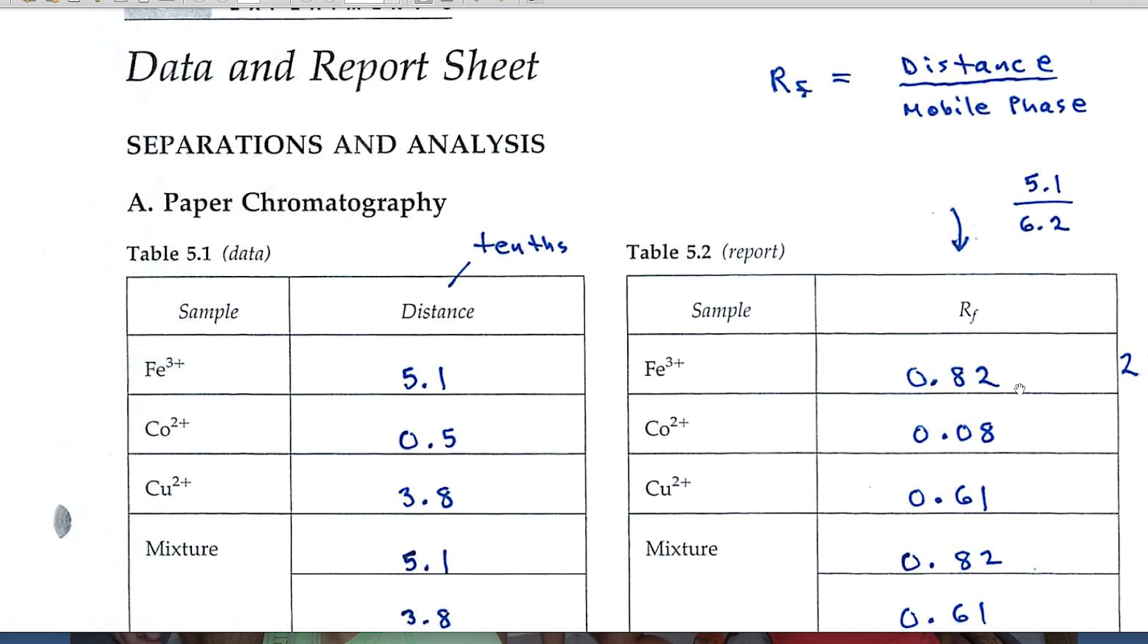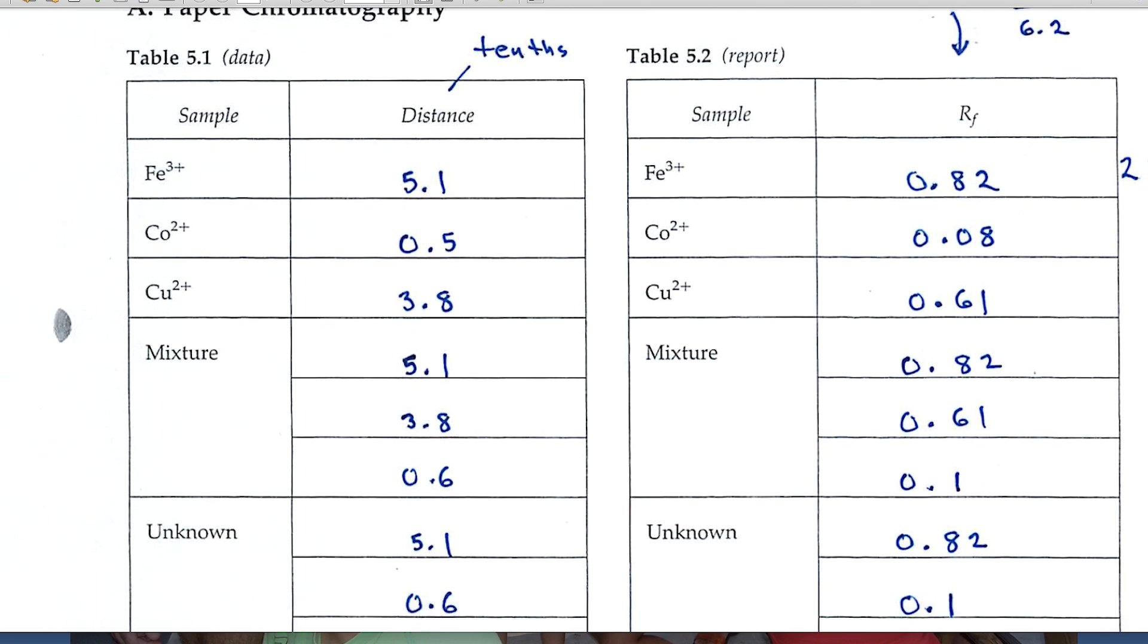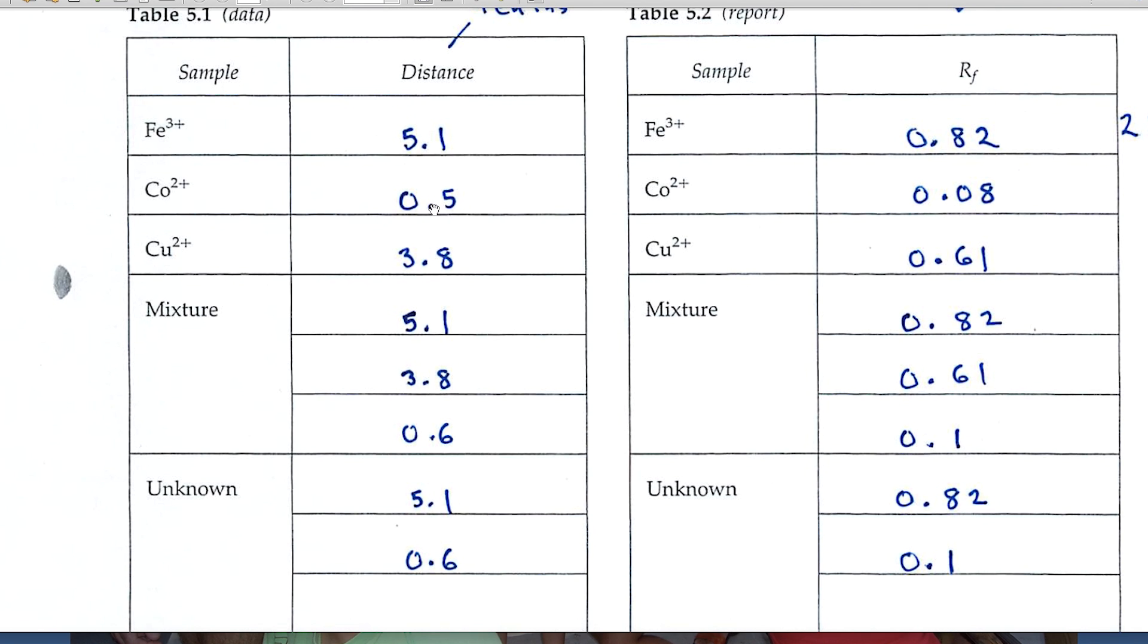Remember always that my numbers are typically hypothetical, so you wouldn't want to copy down these numbers. Just use them as a guide for significant figures and for manipulation. For example, these numbers on the left are to the tenth, but there's two numbers there. So I need two significant figures when I calculate the RF value. The grader will look to see that you've expressed RF values to the hundredth. And each of these will be to the hundredth, unless you had something that migrated less than one.